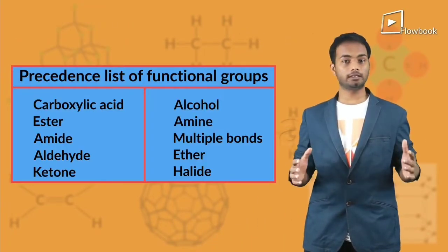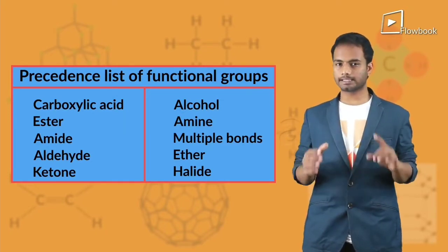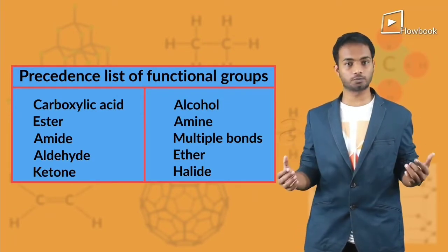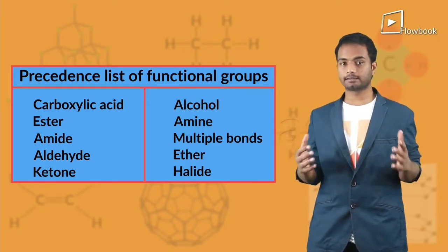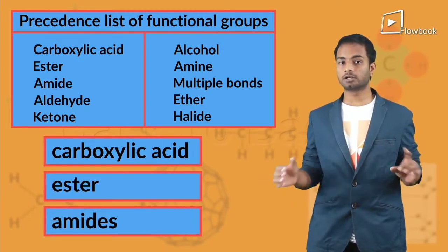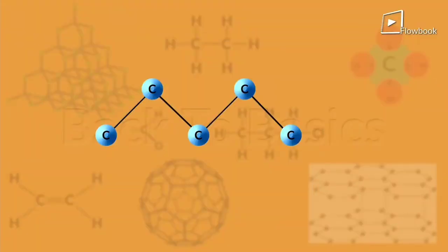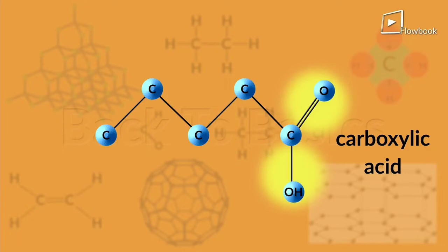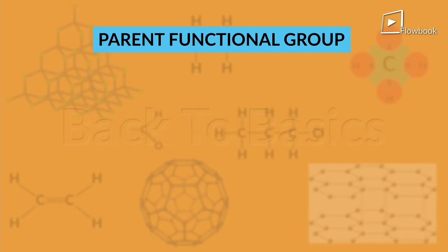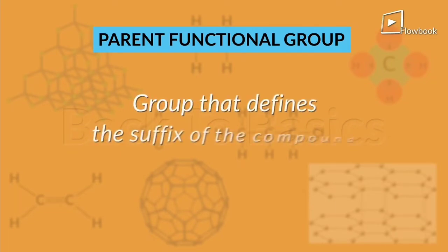But what if there are more than one functional groups on the carbon chain? Well, then you look at the IUPAC list that tells us about the order of precedence — the weightage of importance that we need to give to the functional groups. The list says to give the most importance to carboxylic acid, then esters, then amides, and so on. So if I have a five-carbon chain with a carboxylic acid on it, no matter what else is on the chain, I give the most importance to carboxylic acid and call it pentanoic acid. This is what we call the parent functional group — the group that defines the suffix of the compound.